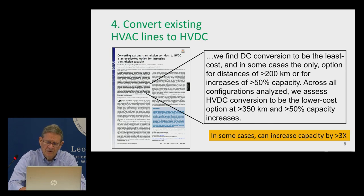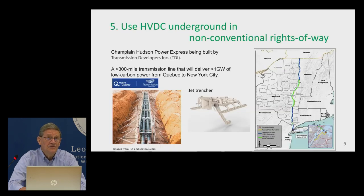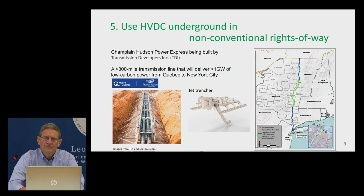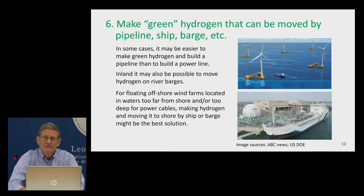By converting AC to DC, you can sometimes get as much as three times as much energy moved through a corridor. HVDC underground through non-conventional rights of way is another possibility. There's a project currently under construction bringing power from Quebec down to New York City by burying cables under Lake Champlain and then under the Hudson River.